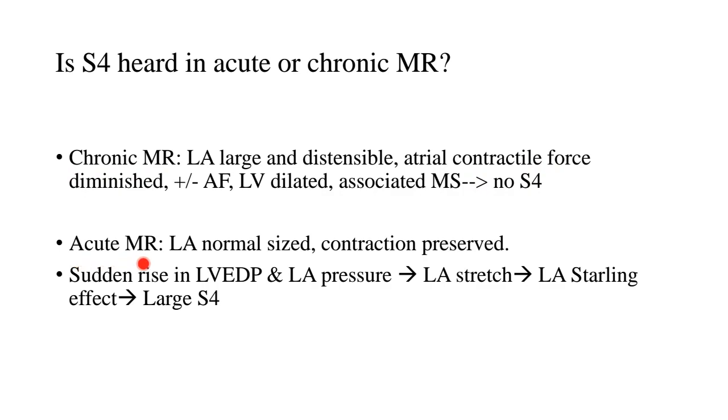Now, what happens in acute mitral regurgitation is that the left atrium is normal in size and its contraction is preserved. When there is a sudden rise in LVEDP as well as LA pressure because of acute MR which can occur because of a chordal rupture or a papillary muscle necrosis or whatever reason it may be, it leads to a stretch in the left atrium. Now, that leads to an effect on the LA which is sort of like a Starling effect that is more stretch leads to more contraction within physiological limits and as a result, the left atrium contracts vigorously and it gives rise to a large S4.